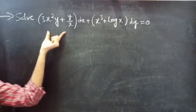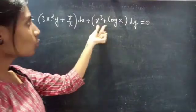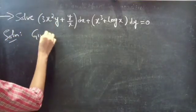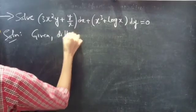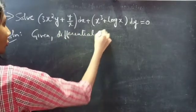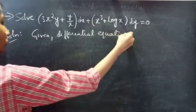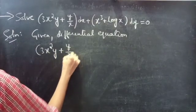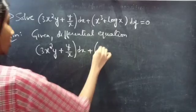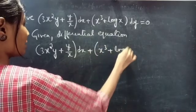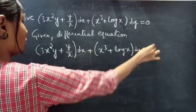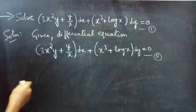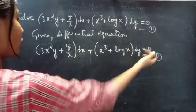Problem. Solve: (3x² y + y/x) dx + (x³ + log x) dy = 0. Solution. Given differential equation: (3x² y + y/x) dx + (x³ + log x) dy = 0. Consider this as equation 1. Resolve into M dx + N dy = 0 form.